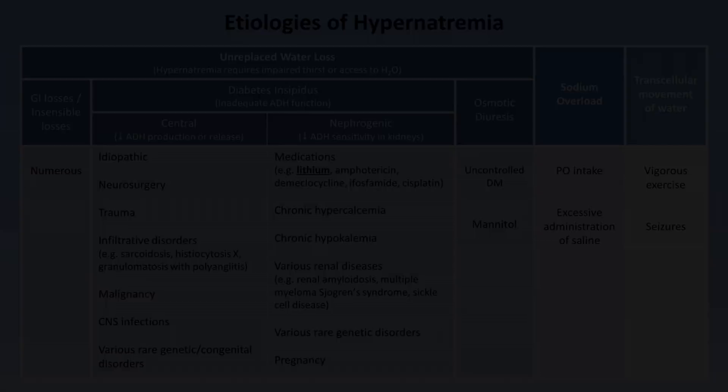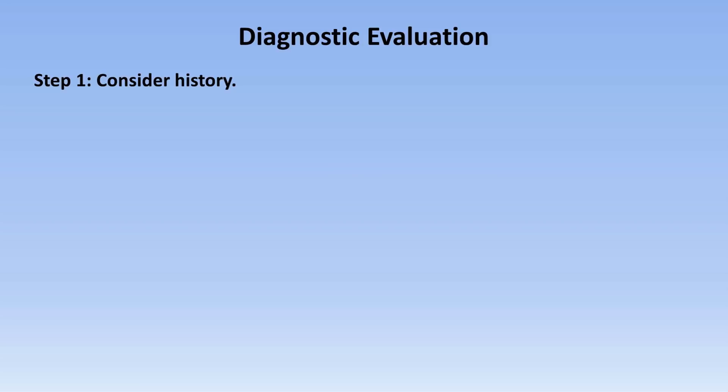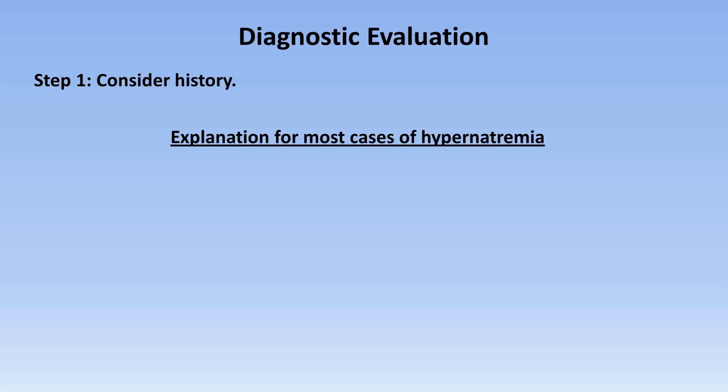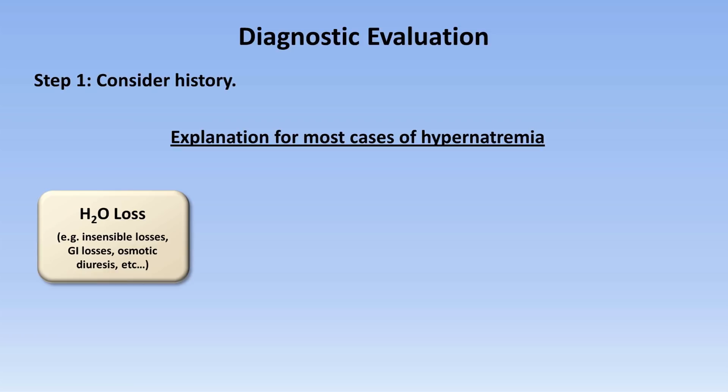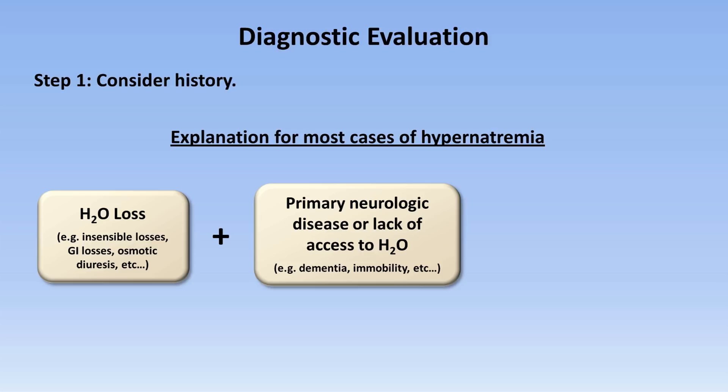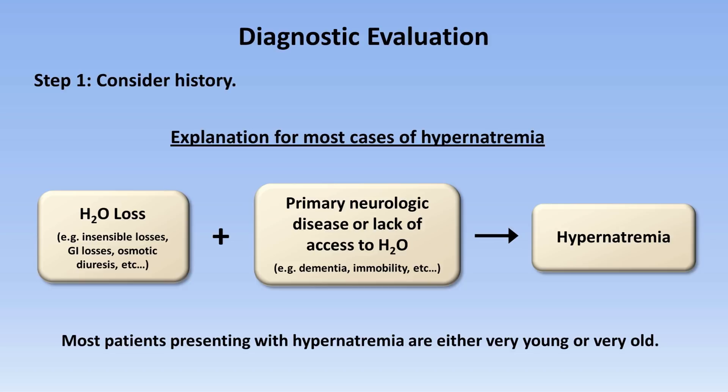When it comes to the diagnostic evaluation, in contrast to hyponatremia, the workup of hypernatremia is usually very brief and obvious. Step 1 is to simply consider the patient's history. Most cases of hypernatremia are caused by loss of solute-poor water, such as insensible losses, GI losses, or osmotic diuresis, combined with a primary neurologic disease that impairs thirst or mobility, or some other problem with accessing water. Most patients with hypernatremia are either very young or elderly patients with dementia or another reason to be bedbound. The history alone will explain over 90% of cases.